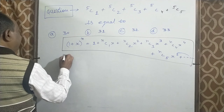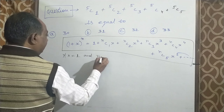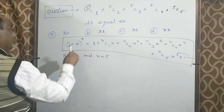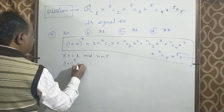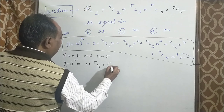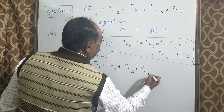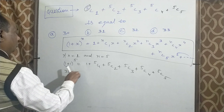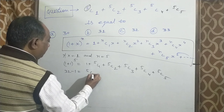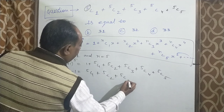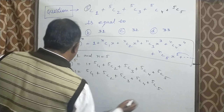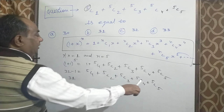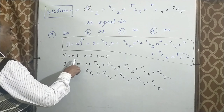अब X equal 1 और N equal 5 रखते हैं। (1 plus 1) की power 5 equal 1 plus 5C1 plus 5C2 plus 5C3 plus 5C4 plus 5C5। 2 की power 5 equal 32, इस 1 को left side में लाने पर 5C1 plus 5C2 plus 5C3 plus 5C4 plus 5C5 equal 31। Answer है 2 की power 5 minus 1 equal 31।